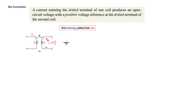The other side dot will have a positive sign of the voltage, and obviously the other end will be negative. So this voltage is just like a battery — positive at the top and negative at the bottom. So we will write the voltage V2 as M·dI/dt with a positive sign.